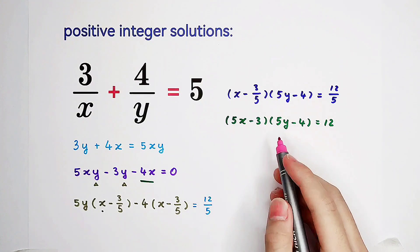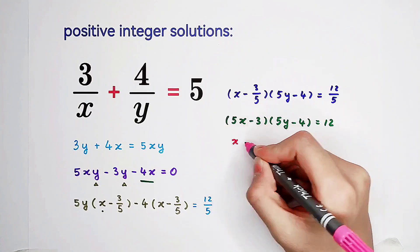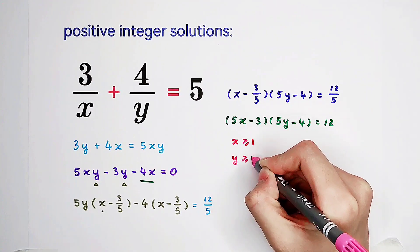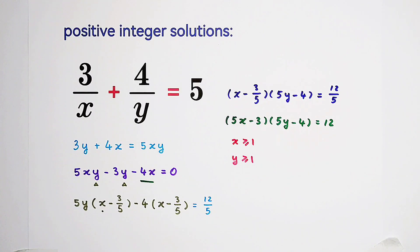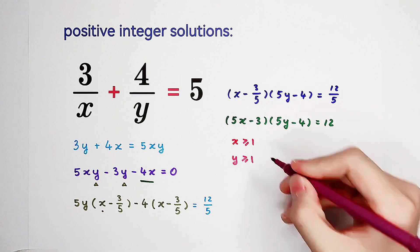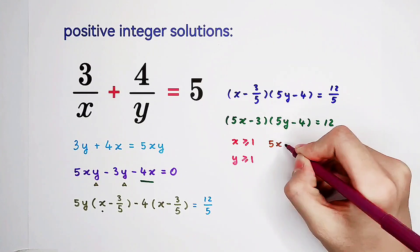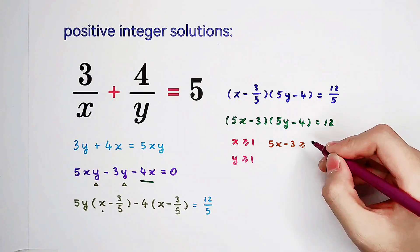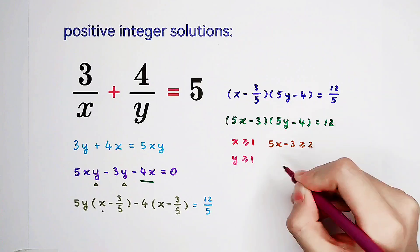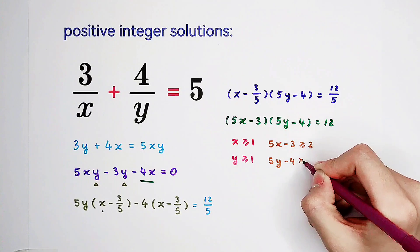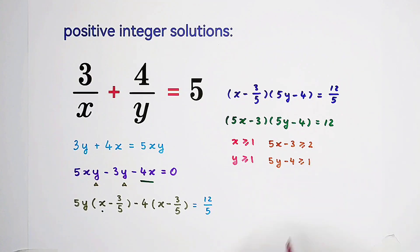Now, because x and y are positive, that means x is greater than or equal to 1, y as well. So then, 5x minus 3 is greater than or equal to 2. 5y minus 4 is greater than or equal to 1. So now, we can factor 12.